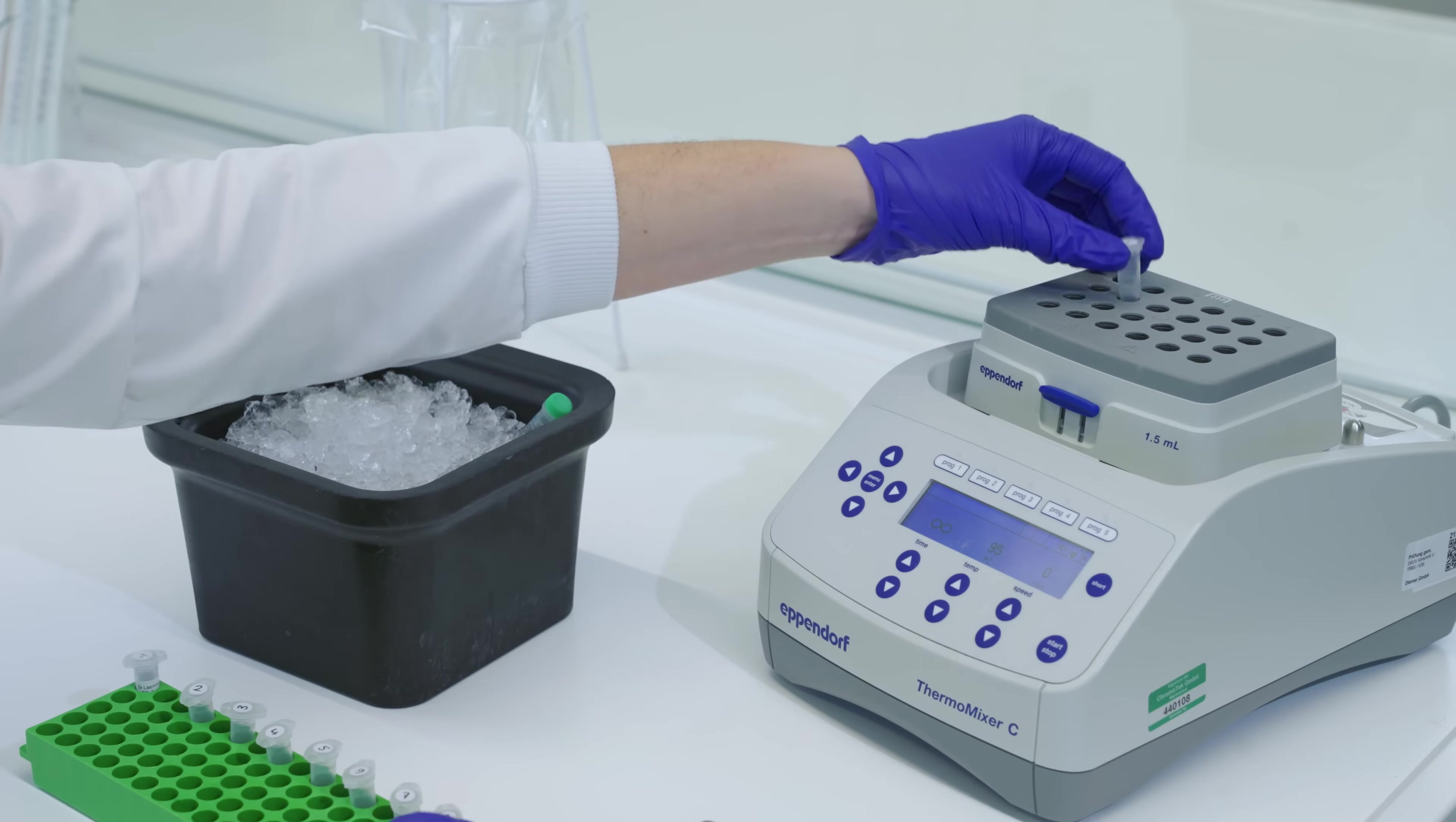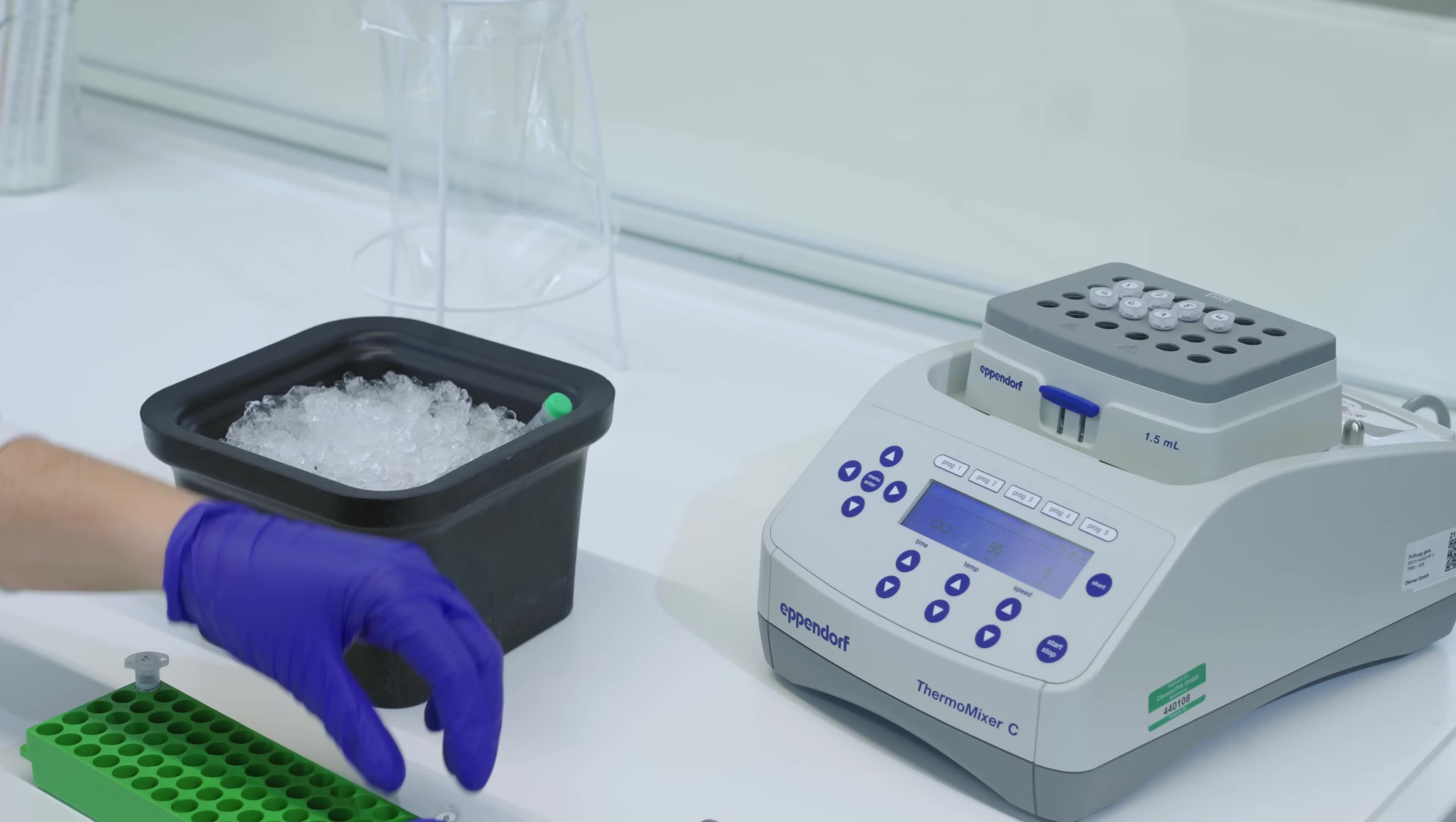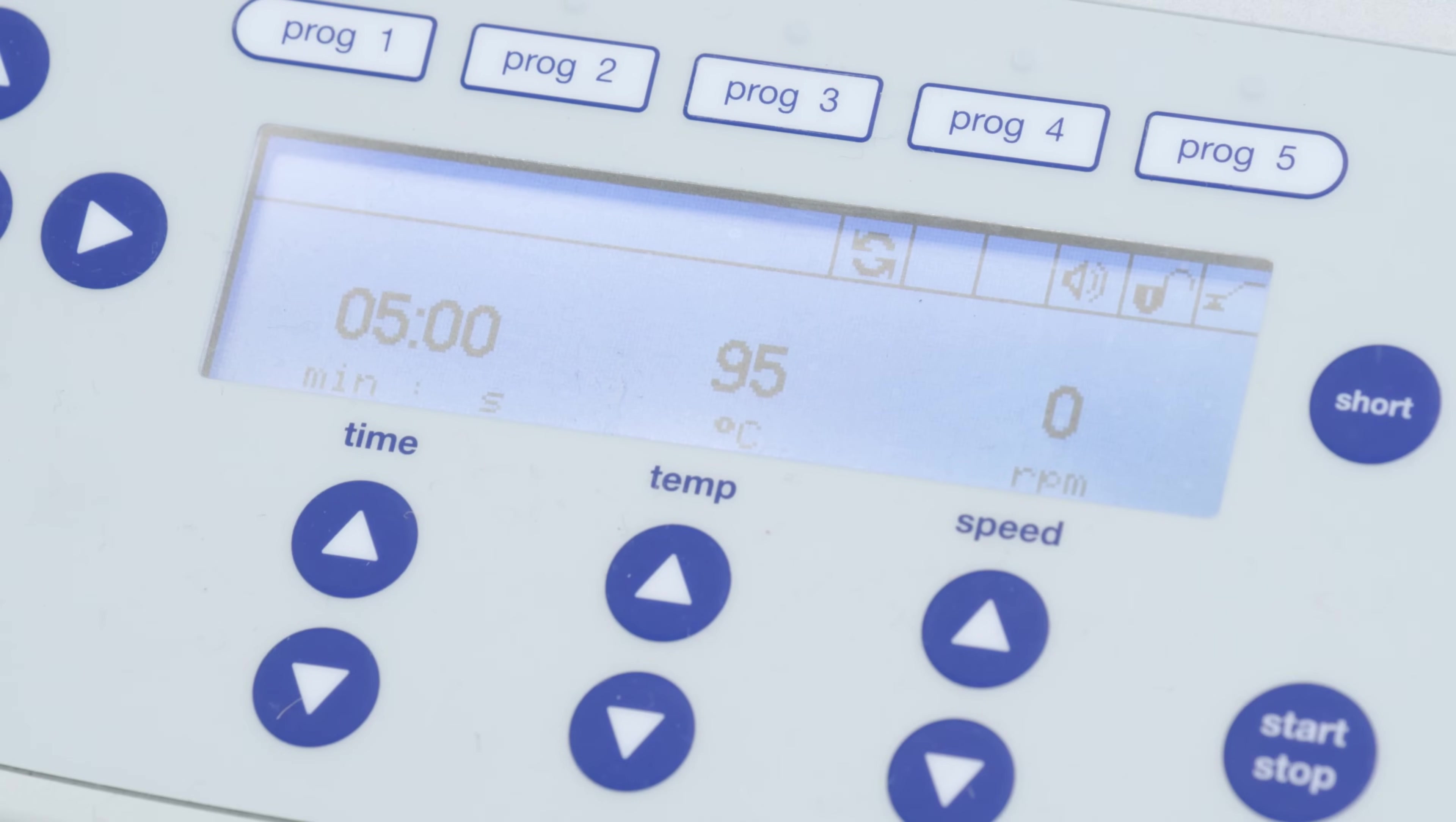To ensure optimal denaturation of the proteins in the sample, a heat denaturation step is usually recommended, boiling the sample at 95 degrees Celsius for 5 to 10 minutes.